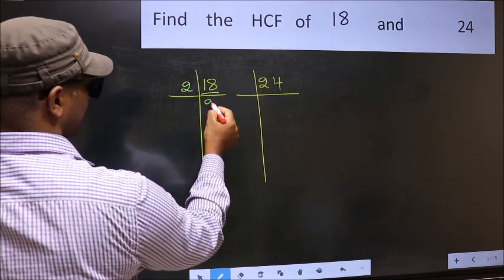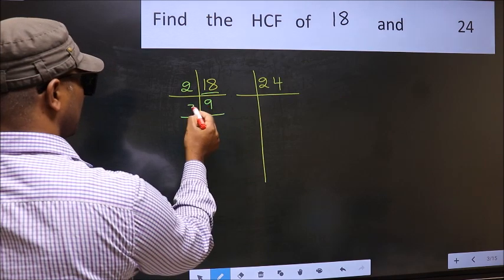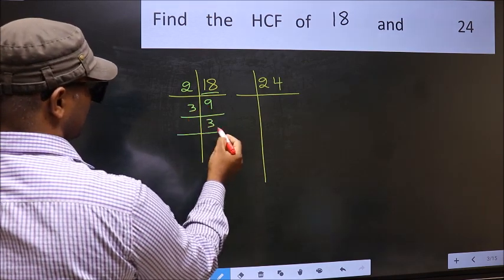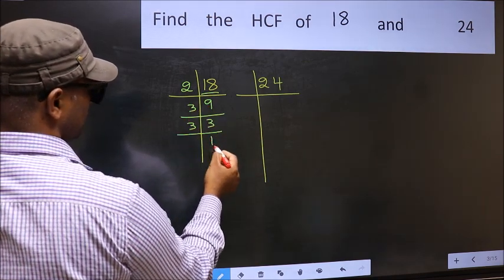18 is 2 times 9. 9 is 3 times 3. 3 is a prime number, so 3 times 1 is 3.